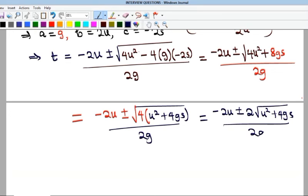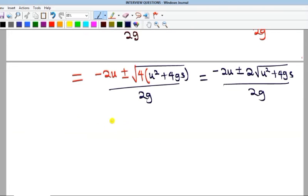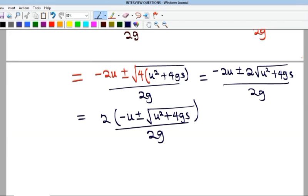Okay, and that is all over our 2g. So finally, if I bring out 2, I'm going to have minus u plus or minus the square root of u squared plus 4gs.